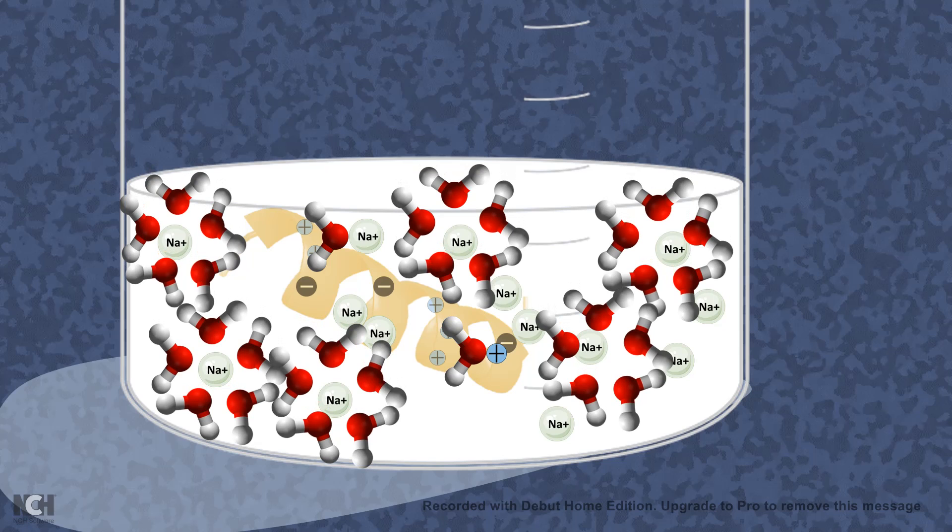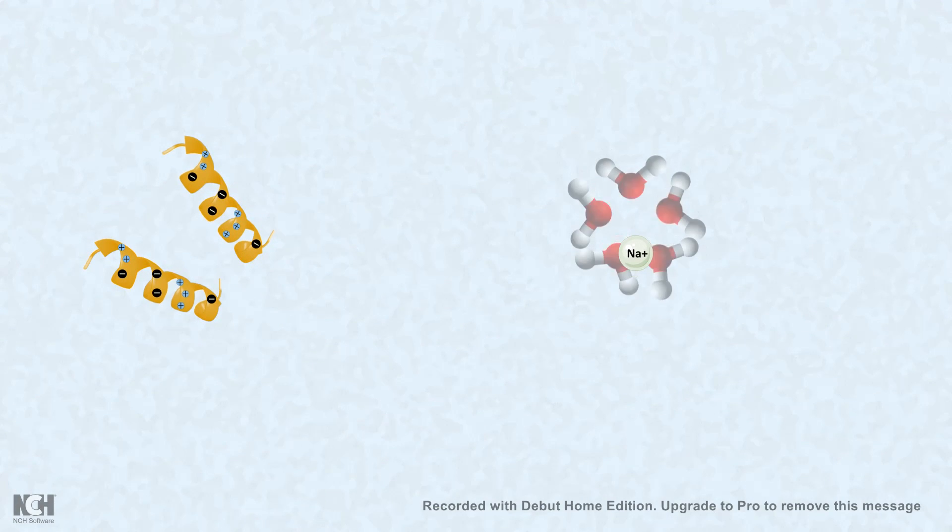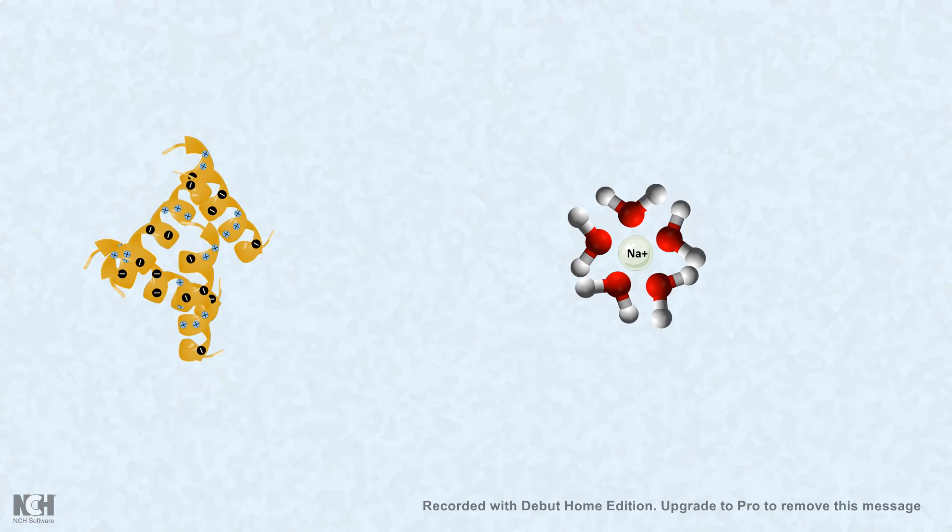So here, what happens in short is as the sodium ions are taking away all of these water molecules, our solute particles that we know are protein particles are interacting with one another. And the solute-solute interaction is much more than the solute-solvent interaction. As a result, the protein gets precipitated.